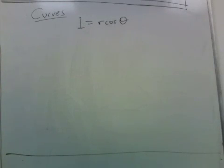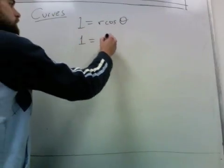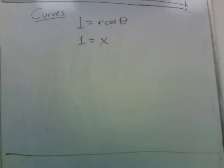Now let's think about what curves equations involving the polar coordinates represent. So in this case, we're given 1 equals r cosine theta. This one turns out to be real easy because r cosine theta is just x. So this is just the same as the vertical line x equals 1.